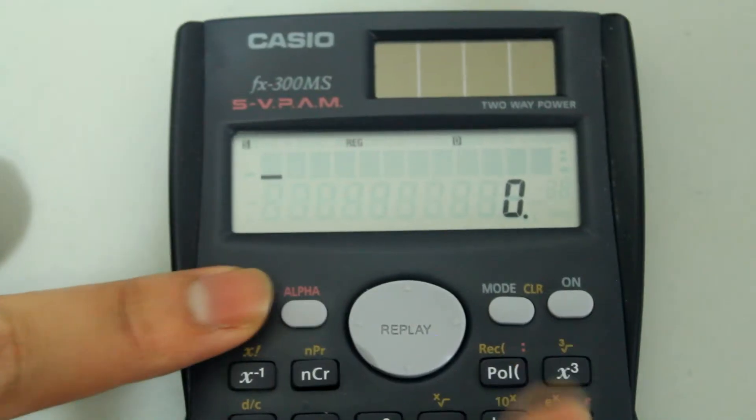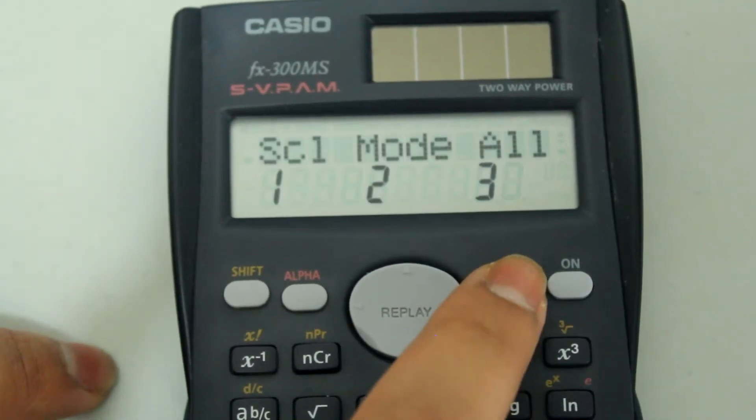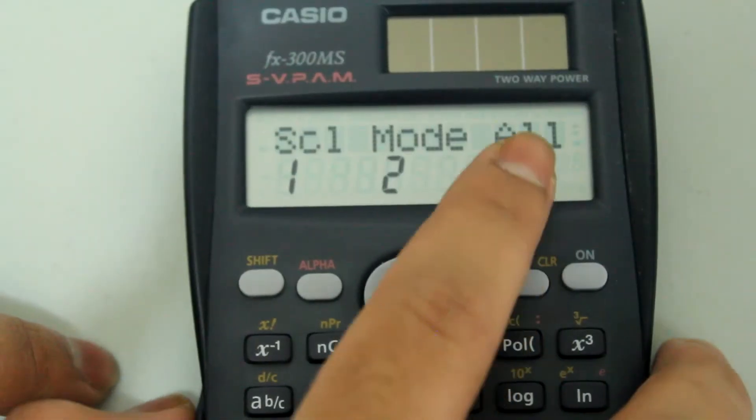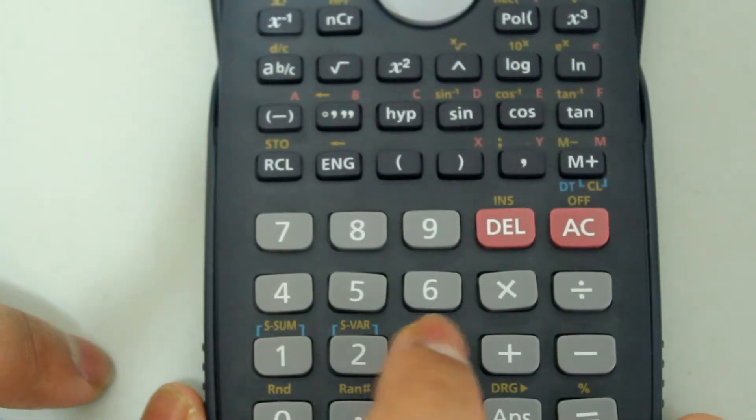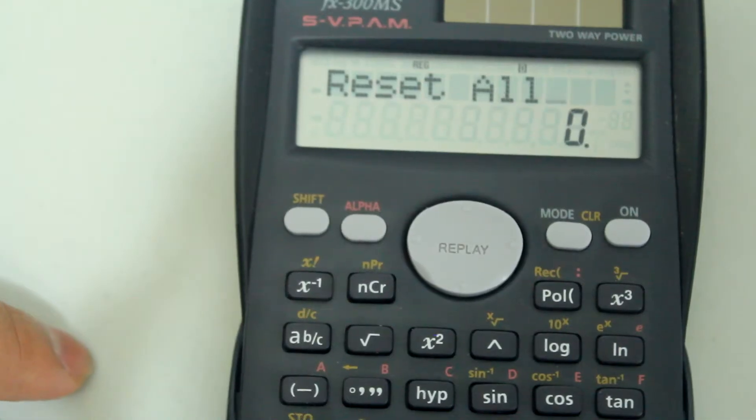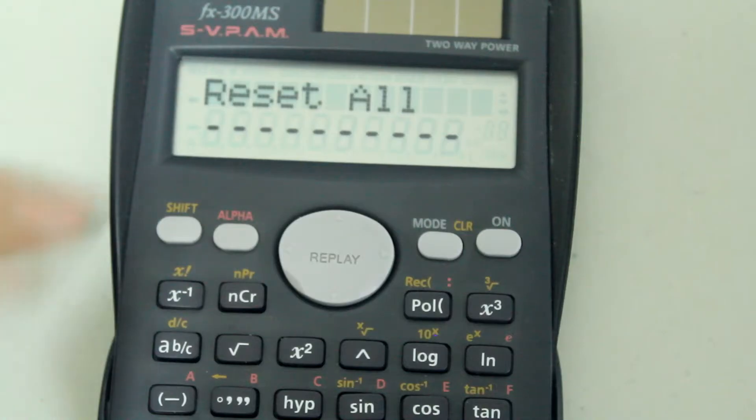So hit shift and then hit the mode button. You'll see that under all is three, so just hit three on the number pad. It says reset all and the cursor is blinking. Hit enter or equals.